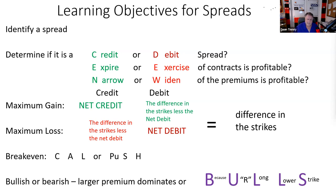Credit, expire, narrow all go together all the time. You can remember that credit has six letters, expire has six letters, narrow has six letters. If on the other hand we determine it's a debit — think Mountain Dew, DEW: Debit, Exercise, Widen. If we have more money out than in, it's a debit spread. We want to exercise the contracts, and we want the difference in premiums to get larger — widen.